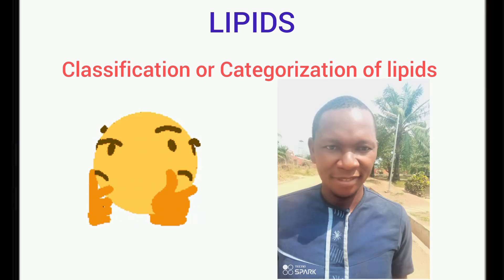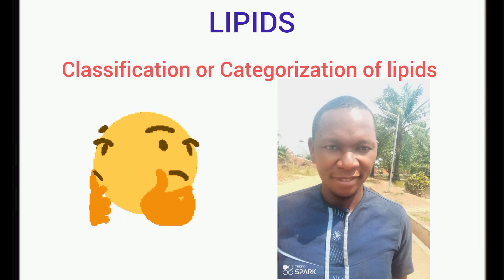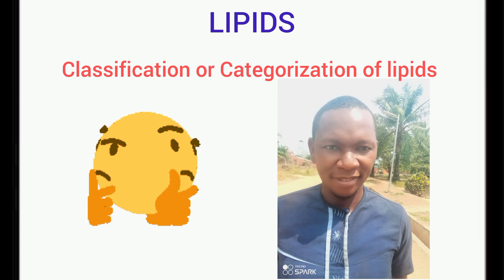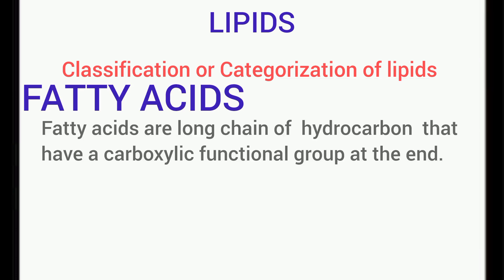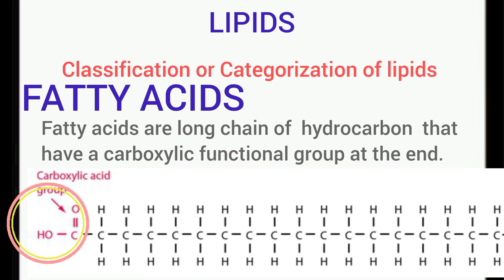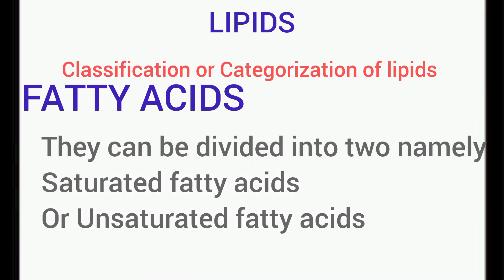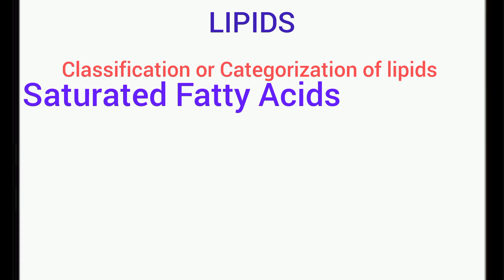Let's talk about the fatty acids. The fatty acids are actually long-chain hydrocarbons comprising of hydrogen and oxygen, though with a carboxylic functional group at the end. The fatty acids are divided into saturated fatty acids and unsaturated fatty acids. The saturated fatty acids possess a long hydrocarbon chain without a double bond.